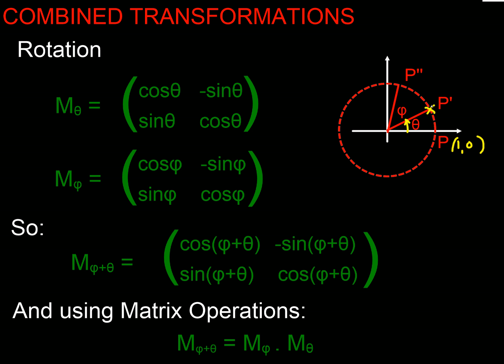Now we probably can see immediately by just looking at that what we could have done is just rotate point P by angle φ+θ to get to P''. So given that we already worked out earlier in our work that the matrix for a rotation was this: cosine, sine, -sine, cosine, with the angle of the rotation.